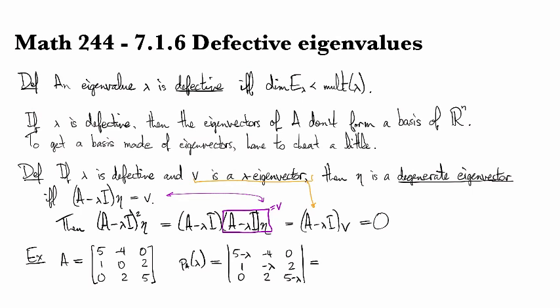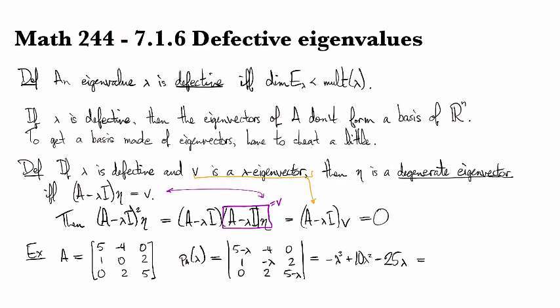And you can crunch that out, and you'll find -lambda^3 + 10 lambda^2 - 25 lambda. And that works out to being -lambda (lambda - 5)^2.